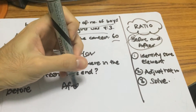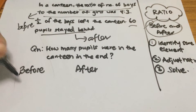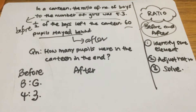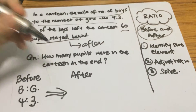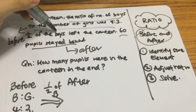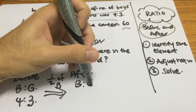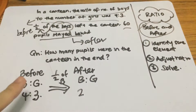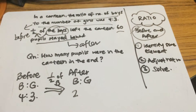We write the ratio for before and write the ratio after. The ratio of boys to girls before is four is to three. In the transition between before and after, half of the boys disappeared. So if half of the boys left the canteen, the boys have two units after. Before there were four units of boys, and after there are only two units of boys.